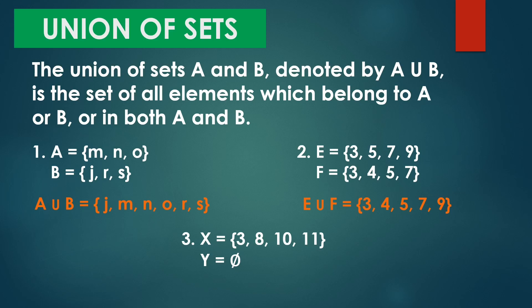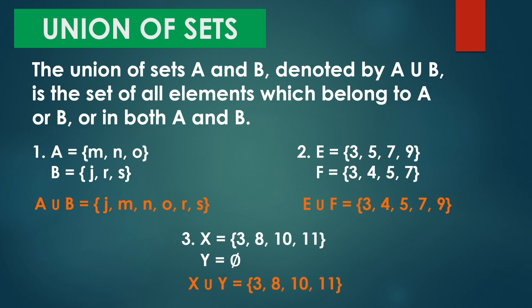Next: set X equals {3, 8, 10, 11} and set Y is a null set. Kanina, kapag ang Y natin ay null set, kukunin natin ang intersection — the answer is a null set. Pero kapag union of sets, yung elements ang pinag-uusapan natin — combine. So ang Y natin ay walang element, ibig sabihin yung X lang natin ang kukunin. So X union Y is equal to {3, 8, 10, 11}. Again, kapag sinabi natin union of sets, combining or the combination of all the elements in a given set.